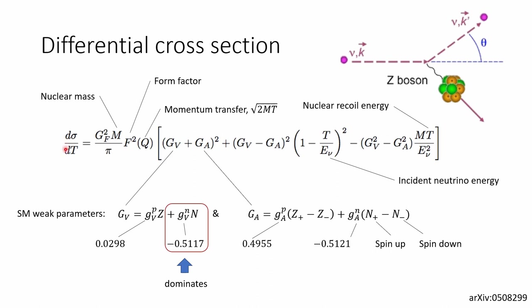The differential cross-section of CEvNS as a function of nuclear recoil energy can be calculated using the standard model. It also depends on the incident neutrino energy. When the momentum transfer is too large, the neutrino starts to see individual nucleons in the nucleus, and the interaction starts to lose its coherent nature. This effect is included in a term called the nuclear form factor. The two parameters, Gv and Ga, can be calculated based on the numbers of protons and neutrons in the nucleus. The axial coupling is rather small since the influence of spin-up and spin-down nucleons cancel each other out. The dominant contribution to the vector coupling comes from the number of neutrons.